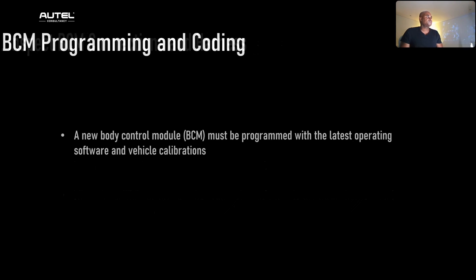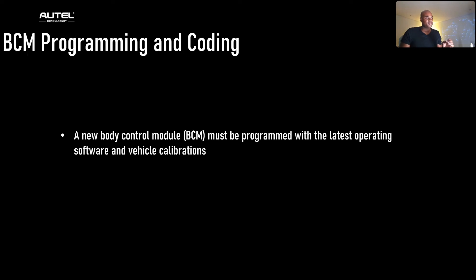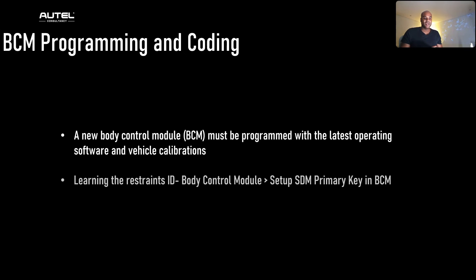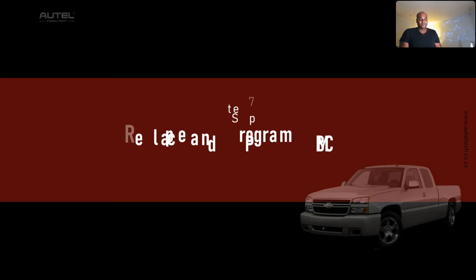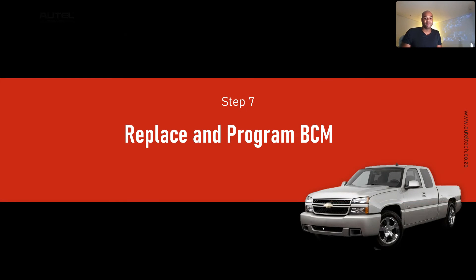Once the BCM is going to be replaced, a new body control module must be programmed with the latest operating software and vehicle calibrations. The configuration procedure involves learning the restraints ID. The function route on the Autel would go to Control Unit > Body Control Module > SCN Setup > Primary Key and BCM. Learning the restraints ID ensures the BCM recognizes and correctly interacts with the SRS components like airbag sensors and seatbelt tension sensors, which may have unique identifiers or calibration settings.